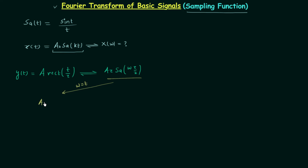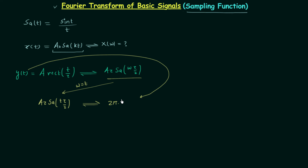Replacing ω by t gives us a·τ·sampling(t·τ/2). According to the duality property, this function will have a Fourier transform equal to 2π multiplied by y(t) when t is replaced by minus ω. So we have 2π·y(−ω) as the Fourier transform of our sampling function.